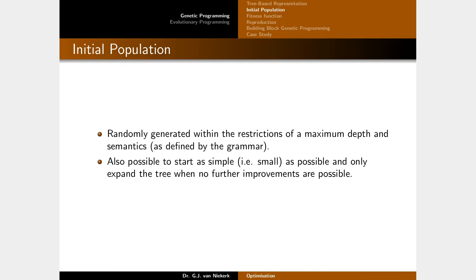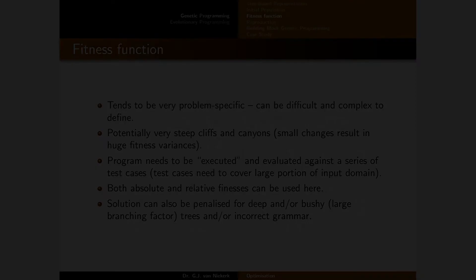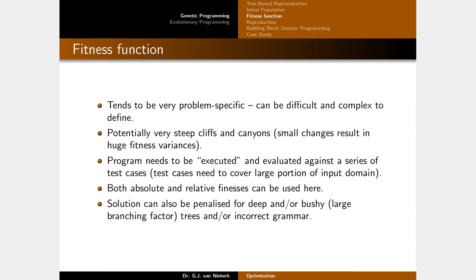For the initial population in genetic programming, usually the quickest approach is to start with a bunch of randomly generated trees. Typically they start very small and expand over time if no further improvements are possible. The fitness function tends to be quite problem-specific and can be difficult and complex to define, because steep cliffs and canyons can arise — meaning very small changes in your program can produce very large changes in fitness.